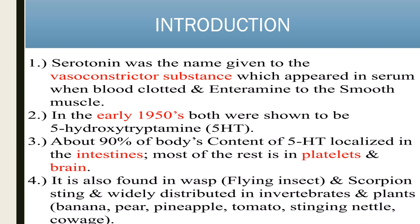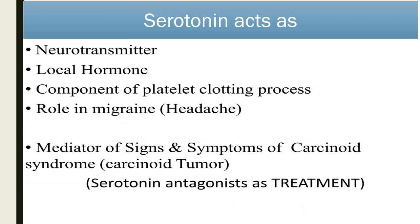5-HT or serotonin was the name given to the vasoconstrictor substance which appears in the serum when blood clotted. 90% of the body's 5-HT is localized in the intestine. Most of the rest is in the platelet and in the brain. It is also found in flying insects, scorpion sting, and widely distributed in invertebrates and plants like banana, pear, pineapple, tomato, stinging nettle, and cabbage. Serotonin acts as a neurotransmitter or local hormone, component of the platelet clotting factor, and has a role in migraine. It is also a mediator of signs and symptoms of carcinoid syndrome, and serotonin antagonists are used as treatment.